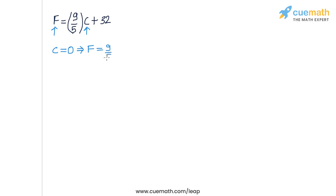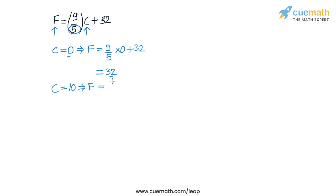Let's take C = 0. Substituting into the equation gives F = 9/5 × 0 + 32, so F = 32. Now let's take C = 10, choosing a multiple of 5 so we get an integer value for F. We get F = 9/5 × 10 + 32 = 18 + 32 = 50. So corresponding to 10°C, the Fahrenheit temperature is 50°F.